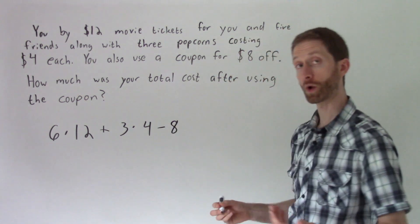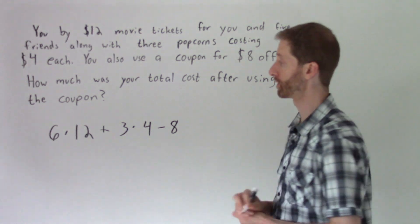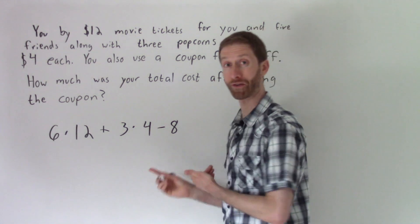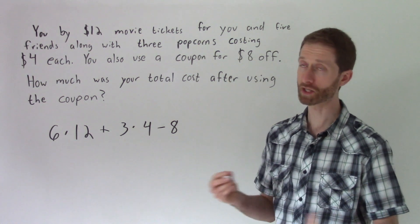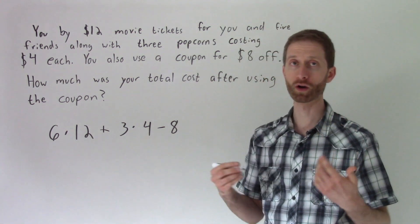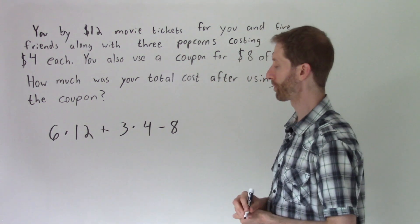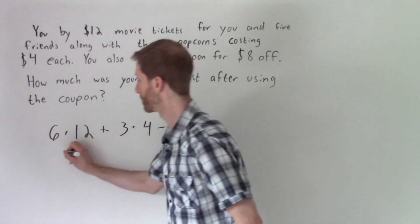Then we get to the question, how much was your total cost after using the coupon? Well, how do we figure that out? Well, we just solve the expression we already have. And that's the beauty of translating as we go along. So we continue to use the order of operations. Multiplication is the highest level of operation that we have here. We do that first going left to right. Six times 12 is 72.